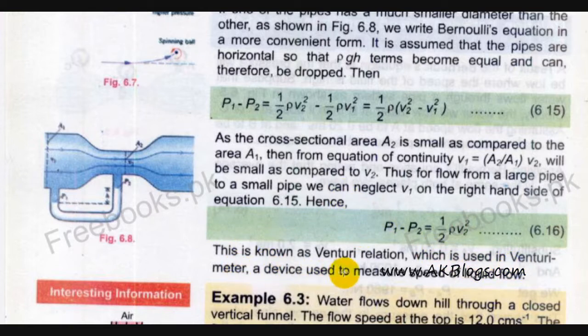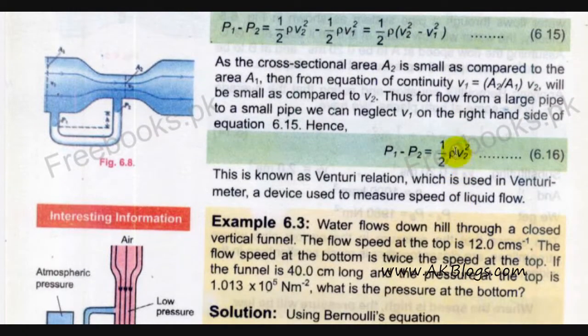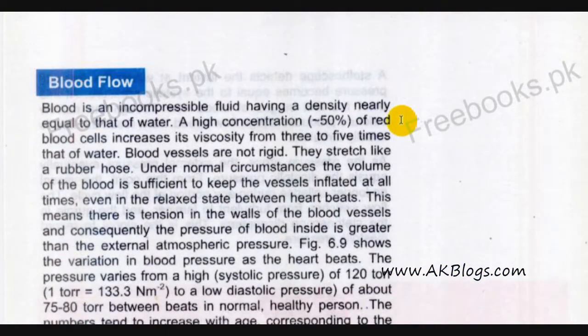This is used in venturi meter, a device used to measure speed of fluid flow. We have equaled the same height, we have the relation which is reduced between pressure and speed. We write this equation that relates v2 square, and this is used in venturi meter. We can use the pressure difference as well. This is our Venturi Relation. After this chapter, the last topic is blood flow.